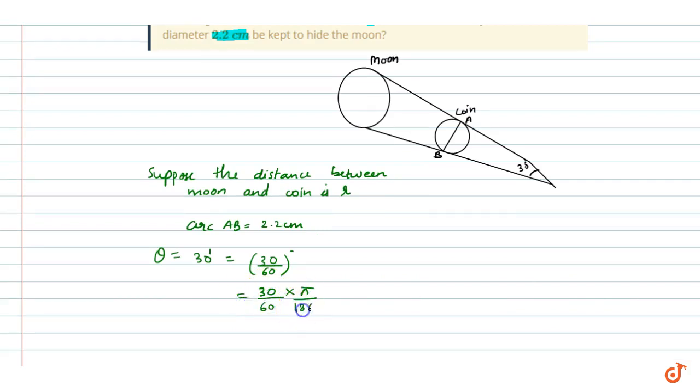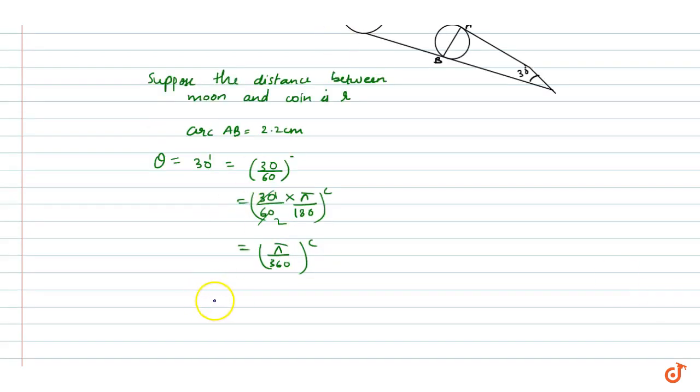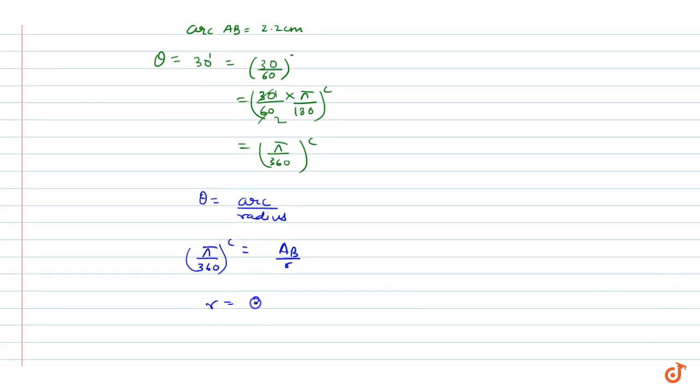We know the formula that theta equals arc upon radius. So here theta is pi by 360 radians, equals arc AB over radius R. So R will be 2.2 cm divided by pi times 360.